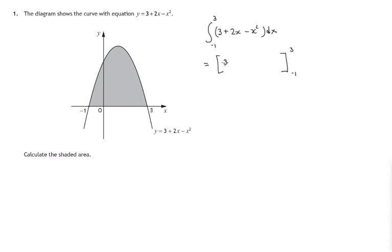Integrating 3 gives us 3x. Integrating 2x, x to the 1, we increase that 1 to a 2 and divide by the new index, 2x squared over 2. For minus x squared, we're increasing that index 2 by 1 and dividing by the new index. The 2s cancel, we get 3x plus x squared minus x cubed over 3.